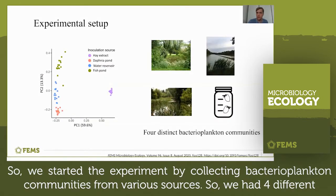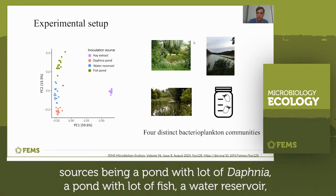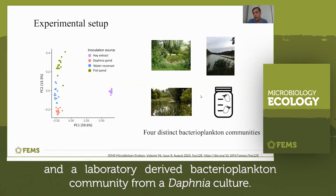We started the experiment by collecting bacterioplankton communities from various sources. We had four different sources: a pond with a lot of Daphnia, a pond with a lot of fish, a water reservoir, and a laboratory-derived bacterioplankton community from a Daphnia culture.